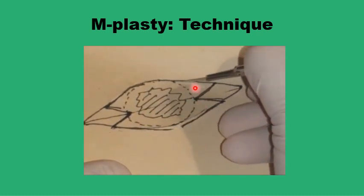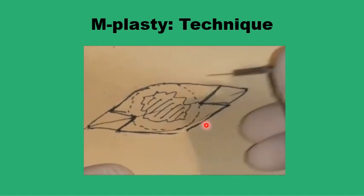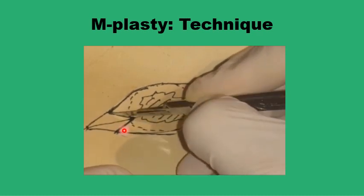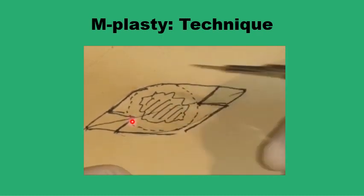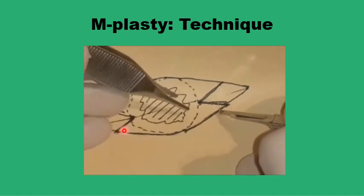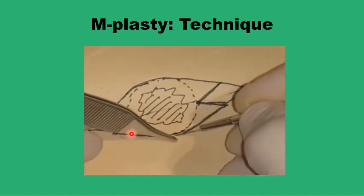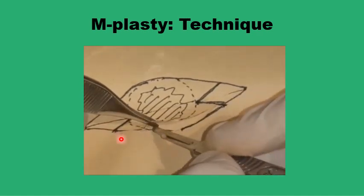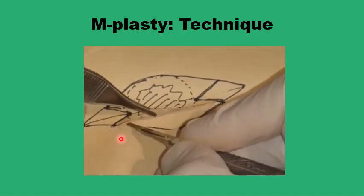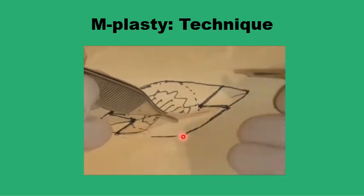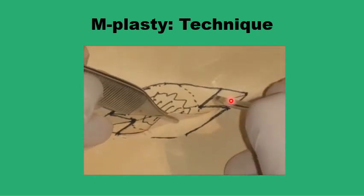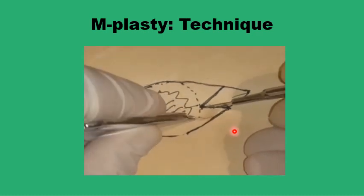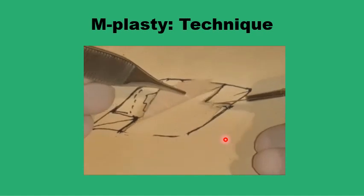You will end up with acute angles in three places on each side, and it's very important to have these three-point junctions aligned while suturing the wound. At the end, you've saved a little piece of skin, but you will spend a little more time trying to realign all the angles correctly.